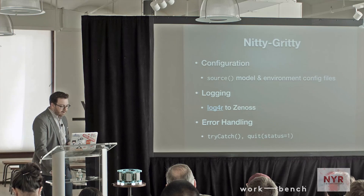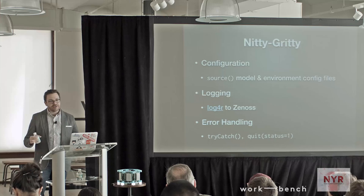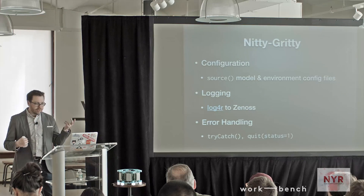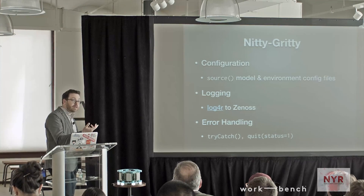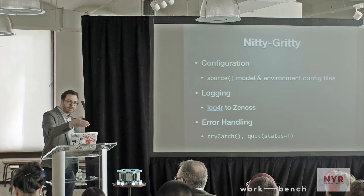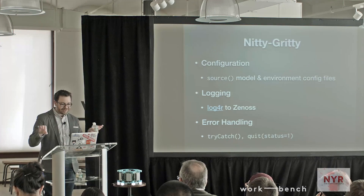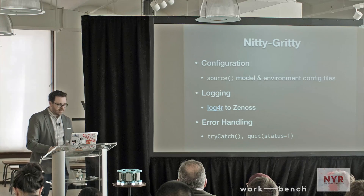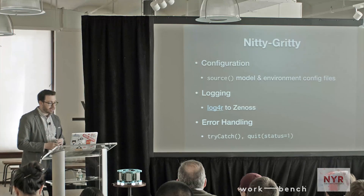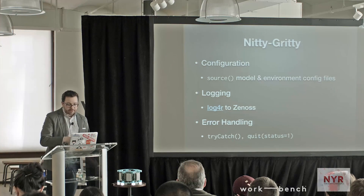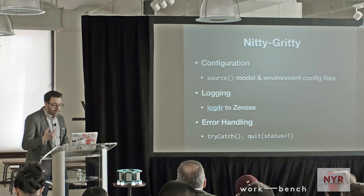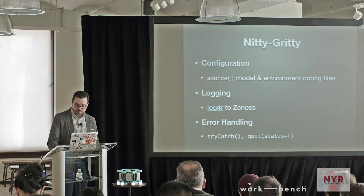For the nitty-gritty: configuration is pretty easy in R — it's an interpreted language, you just source a file that assigns things to variables. It's handy to separate model configuration from environment configuration, so the ops team can change what database they're pointing to without touching your model parameters. Logging is also easy; there are good packages, and Log4R by John Miles White was easy to pipe to a monitoring system. Standard R error handling with try-catch gives you the tools to catch and log errors and exit with fatal errors in a way that lets you know what happened.